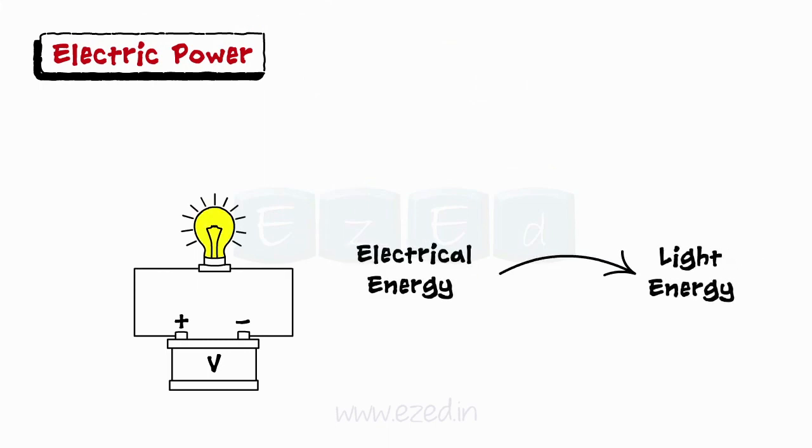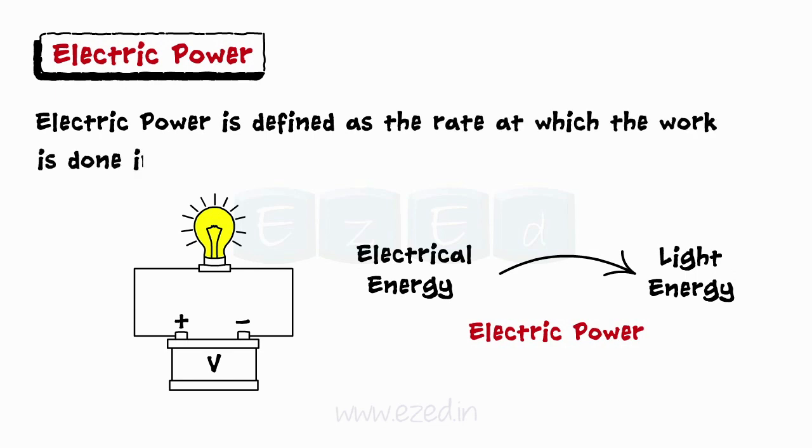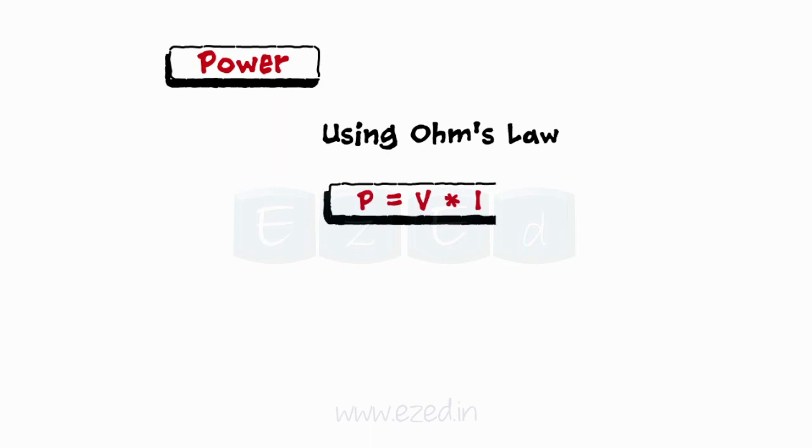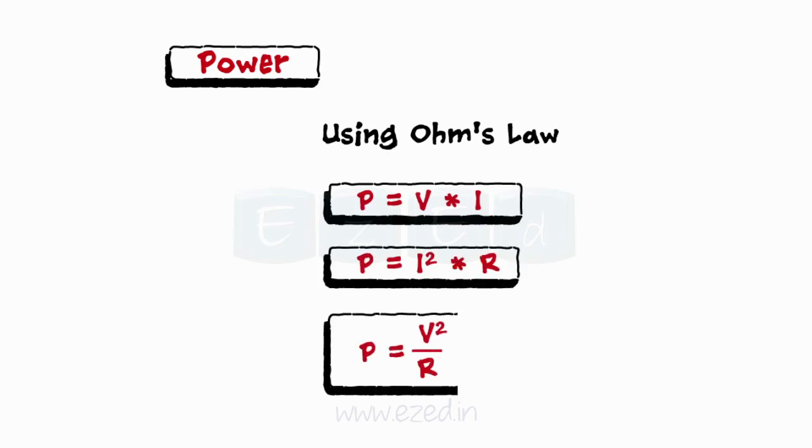When the bulb glows, it converts the electrical energy into light. The capacity of the bulb to perform this energy conversion is called as its power. Thus, electric power is defined as the rate at which the work is done in an electric circuit, that is the rate at which the bulb converts electrical energy into light. The unit of the power is watt. Using Ohm's law, we can write three different expressions for the power as P equals V into I, P equals I square R and P equals V square upon R.